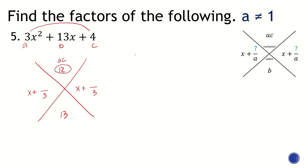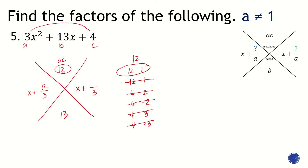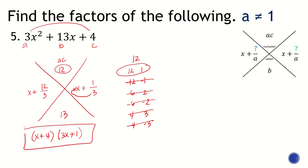Which pair gives a sum of 13? That's 12 and 1. Now we simplify: 12 over 3 is 4, so the left factor is X plus 4. On the right side, we multiply the 3 to X, giving us 3X plus 1. So the answer is X plus 4, times 3X plus 1.